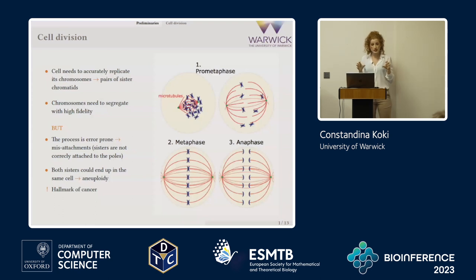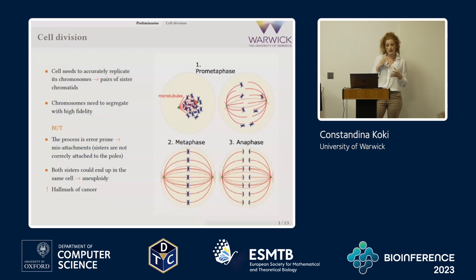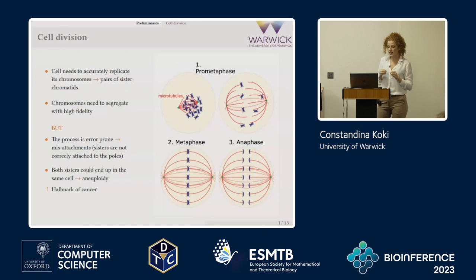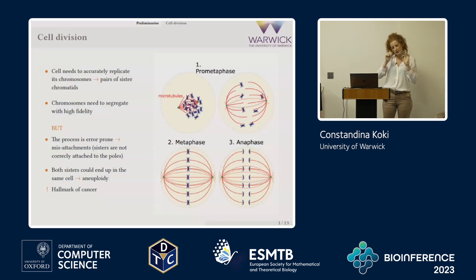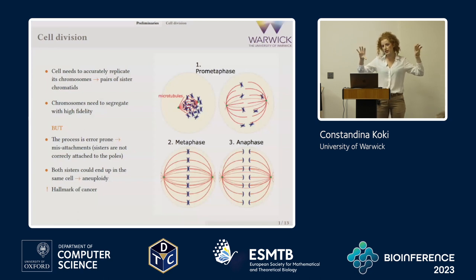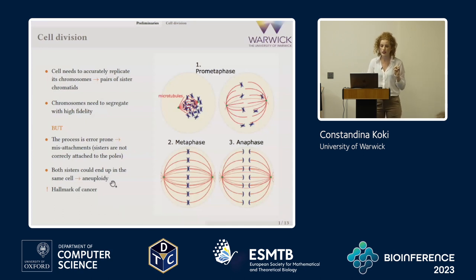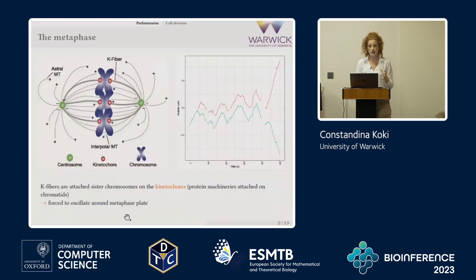It's very important to have an extraordinarily precise process, but unfortunately this process is error-prone. We might have misattachments, meaning the sisters may not be correctly attached to the two poles. The result might be both sisters ending up in one cell, so we end up with two cells with a different number of chromosomes. This phenomenon is called aneuploidy and it's a hallmark of cancer, so it's important to understand how cell division works.